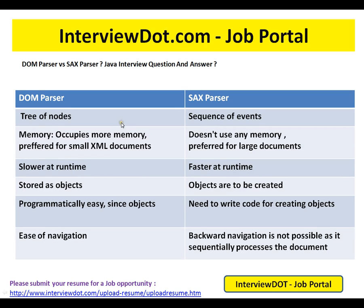The differences between DOM parser and SAX parser: DOM parser uses a tree of nodes, whereas SAX parser uses a sequence of events. DOM parser occupies more memory because it loads XML documents in the initial step, so it is preferred for small XML documents. SAX parser does not use as much memory and is preferred for larger documents.